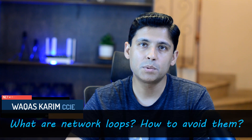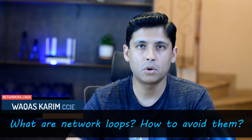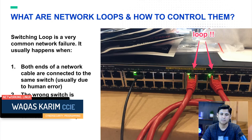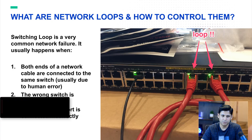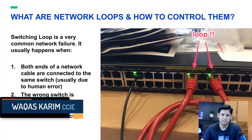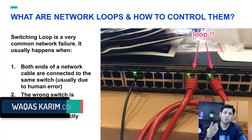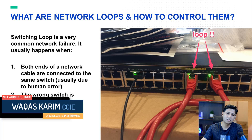What are network loops and how to control them? A switching loop is a very common network failure — it's a big problem, and especially common for sensitive networks like CCTV. It usually happens when both ends of a network cable are connected to the same switch.